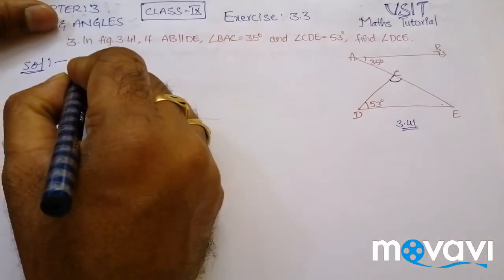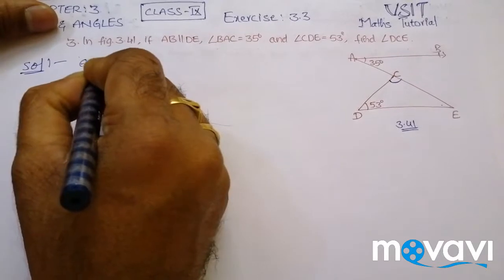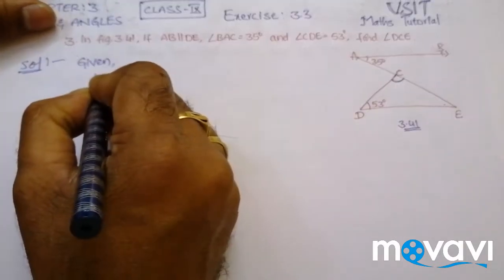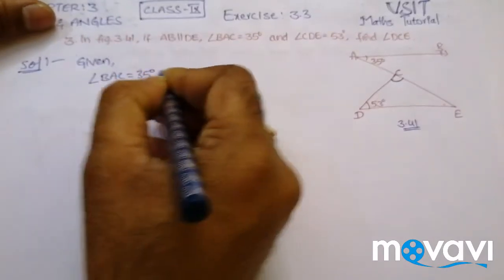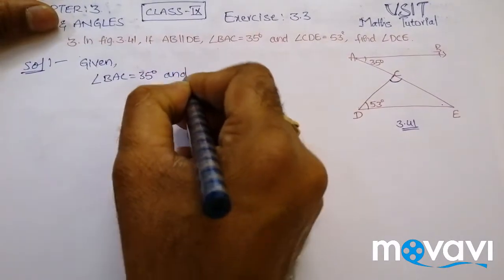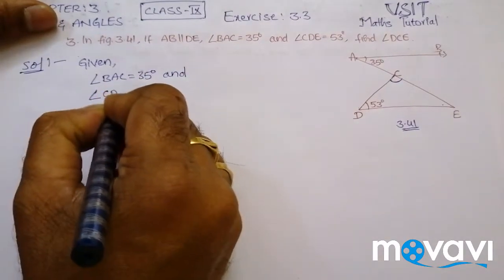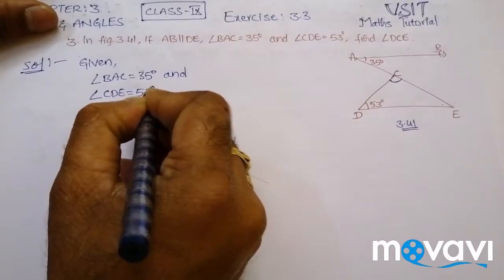First let us write the given data. Given angle BAC is equal to 35 degrees and angle CDE is equal to 53 degrees.